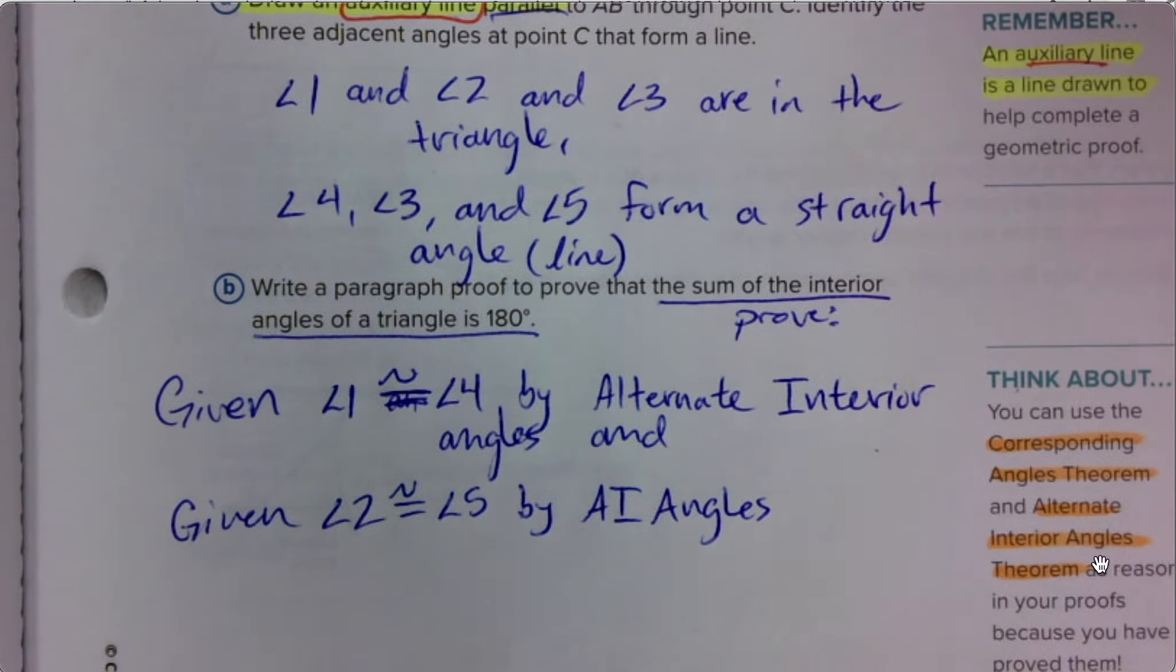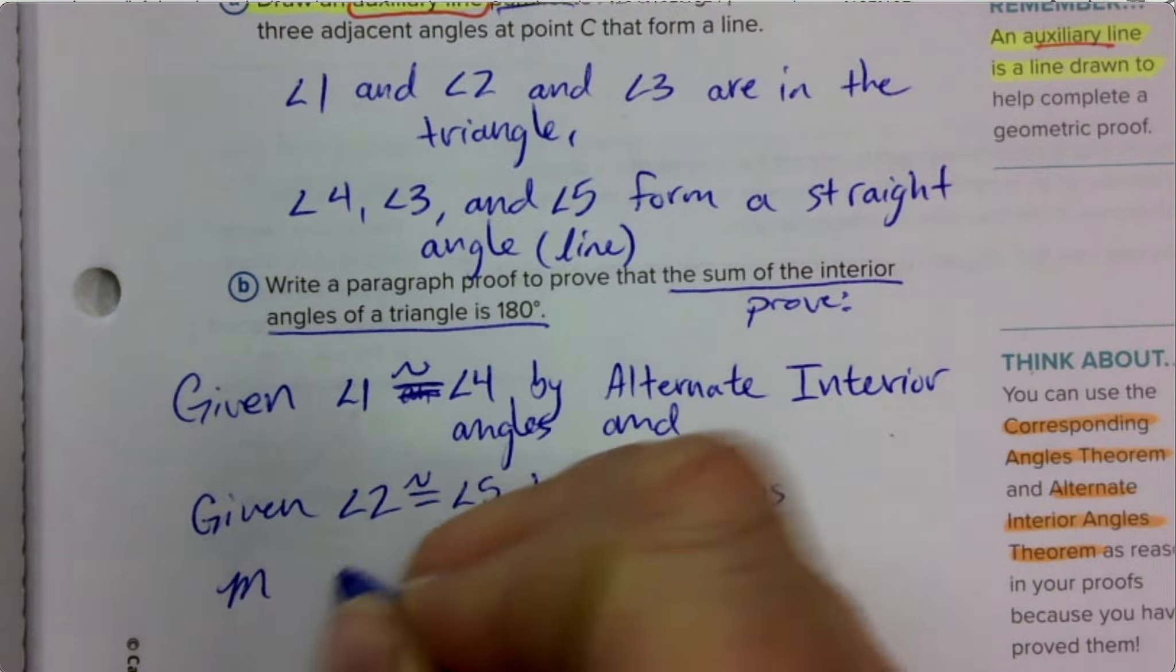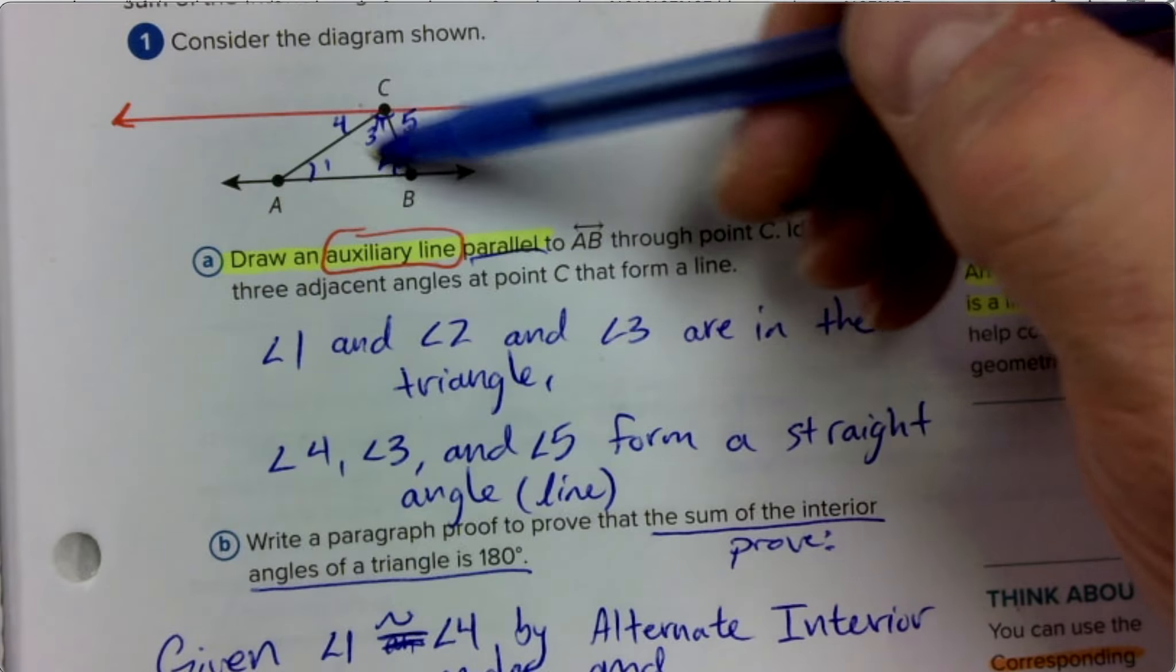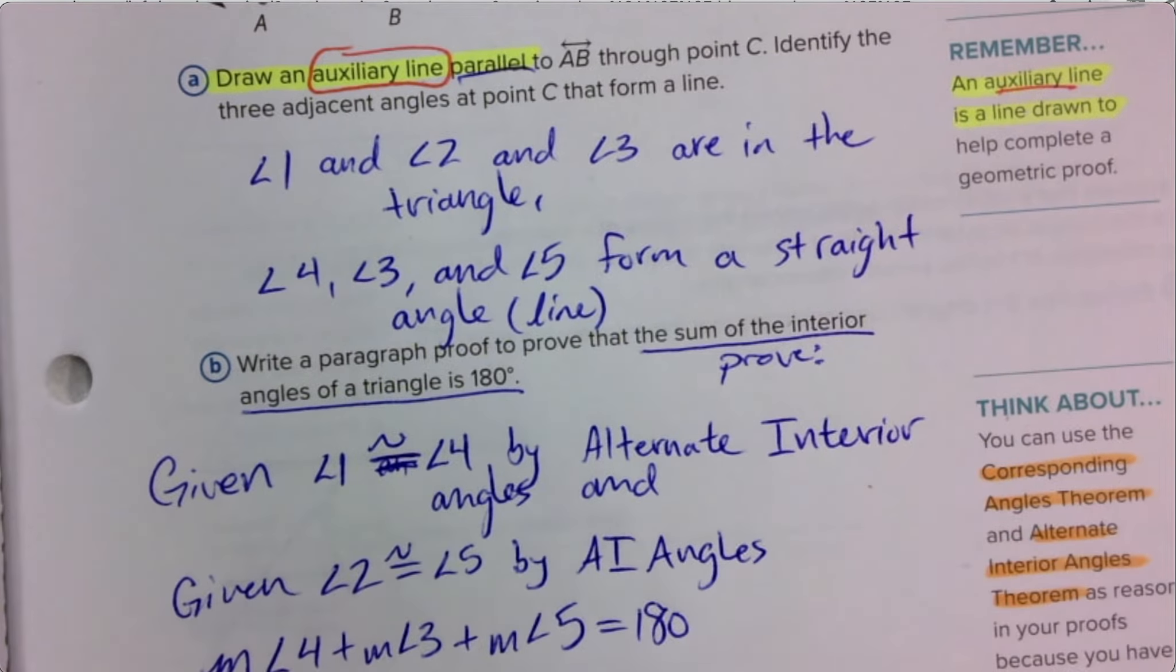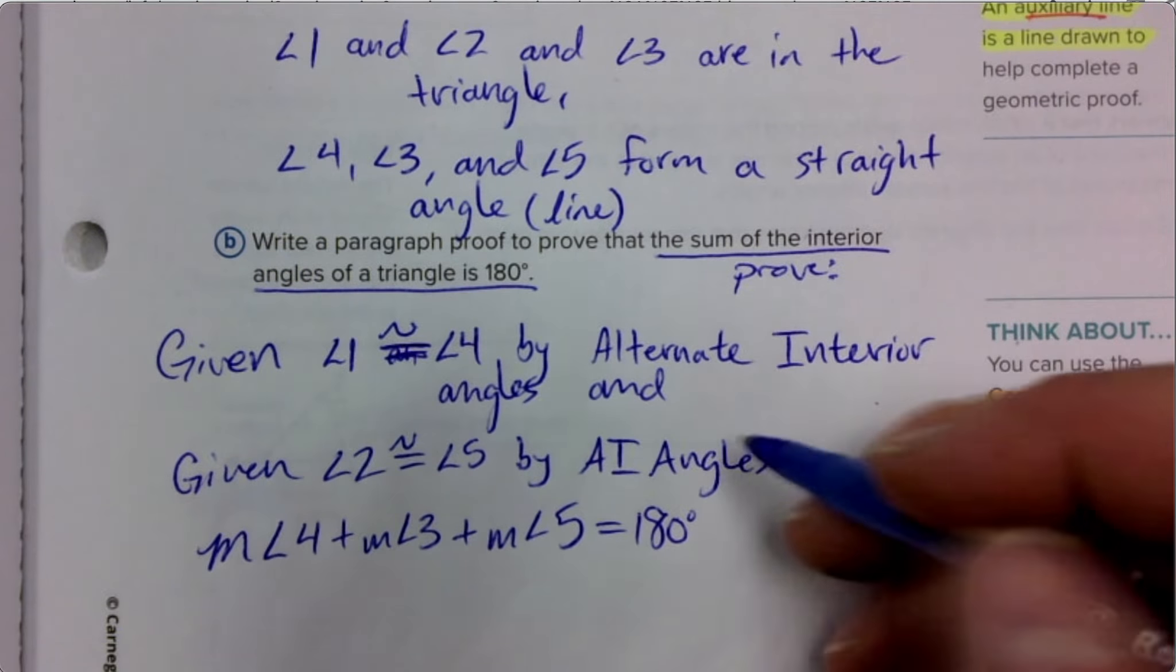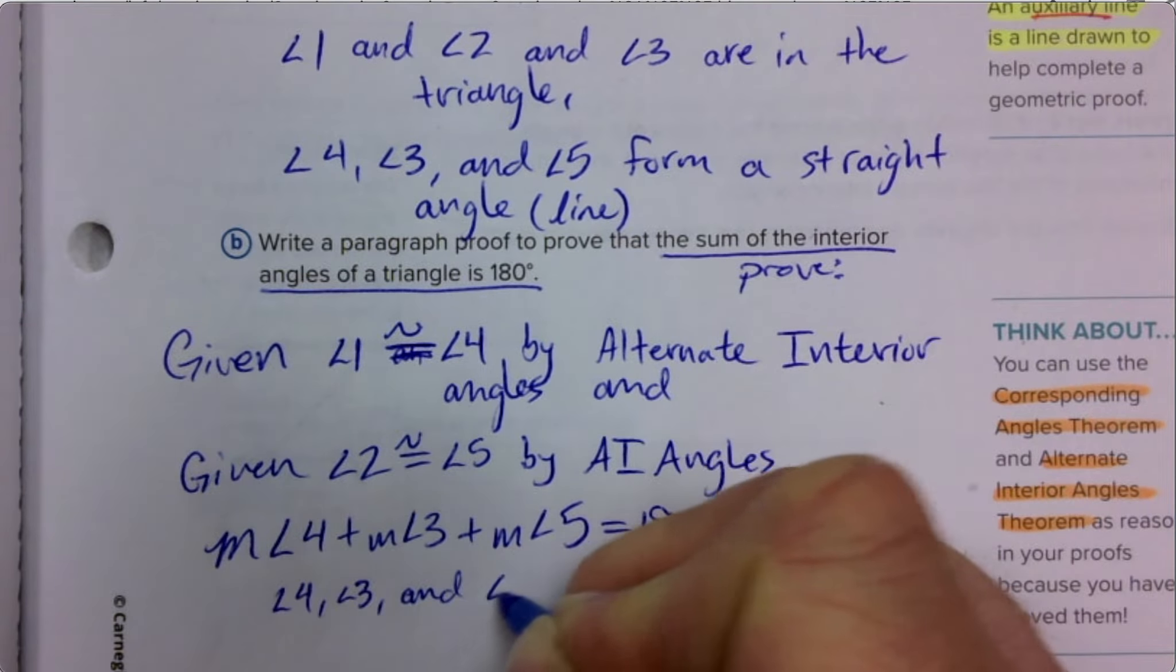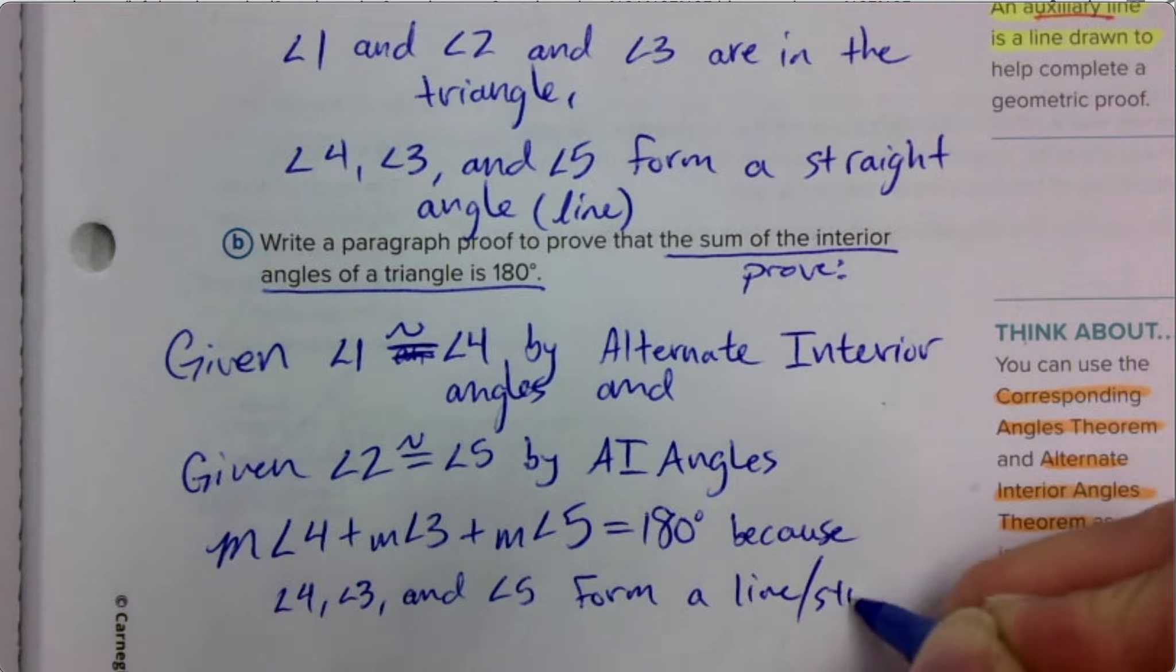So if they're congruent, we also get to say this. Then we get to add up the measure of angle four plus the measure of angle three plus the measure of angle five. We're going to go ahead and add up the three angles that form that line. It equals 180 because they are linear pair or supplementary because angle four, angle three and angle five form a line, one straight angle.